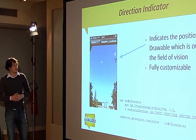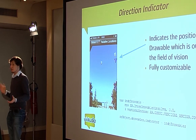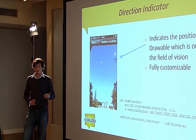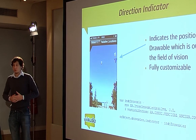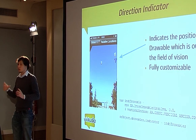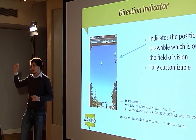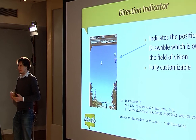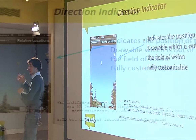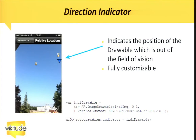Another feature for the user to orient in the augmented reality world is the direction indicator. It's comparable to what you might know from fighter plane simulations, where enemies that are off-screen are displayed on the side of the screen with a little indicator. You can use that to tell the user they should be turning around because you want them looking in another direction. In the code, here we have this geo object and I simply set drawable.indicator to, for example, this image.